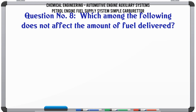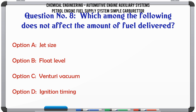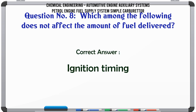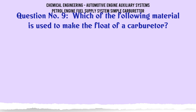Which among the following does not affect the amount of fuel delivered? A. Jet size. B. Float level. C. Venturi vacuum. D. Ignition timing. The correct answer is ignition timing.